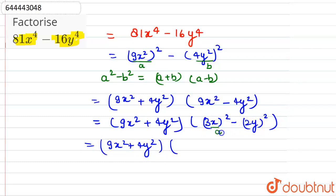3x is treated as a and 2y will be treated as b. We can write a plus b, that is 3x plus 2y, into a minus b, so 3x minus b, that is 2y.